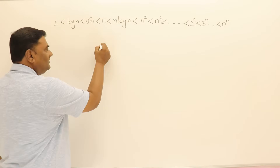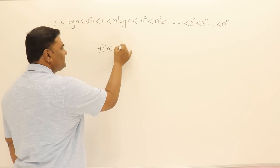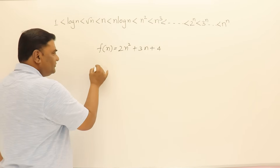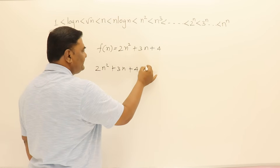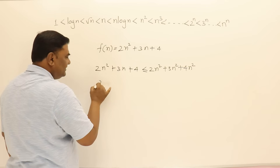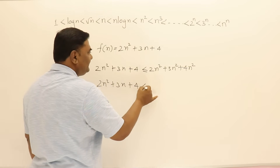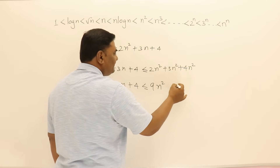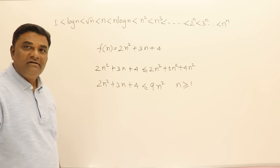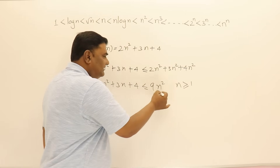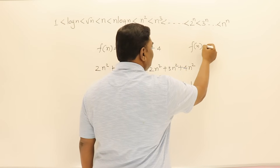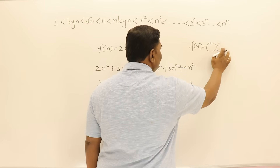Let's take an example: f(n) = 2n² + 3n + 4. We can show that 2n² + 3n + 4 is less than 2n² + 3n² + 4n², which equals 9n², for all n greater than or equal to some value. So this gives us a constant c and a function g(n) = n², meaning f(n) is Big-O of g(n). Therefore, f(n) is Big-O of n².